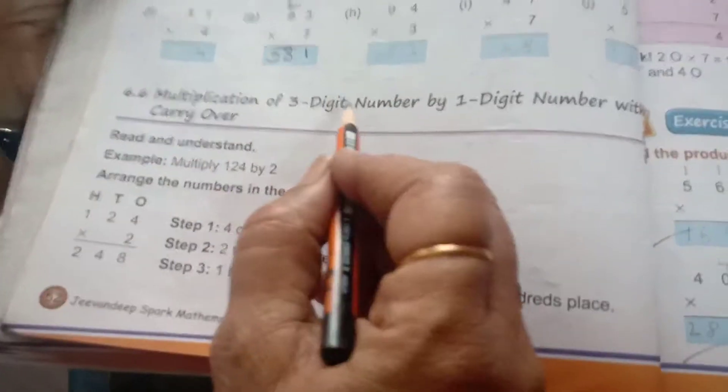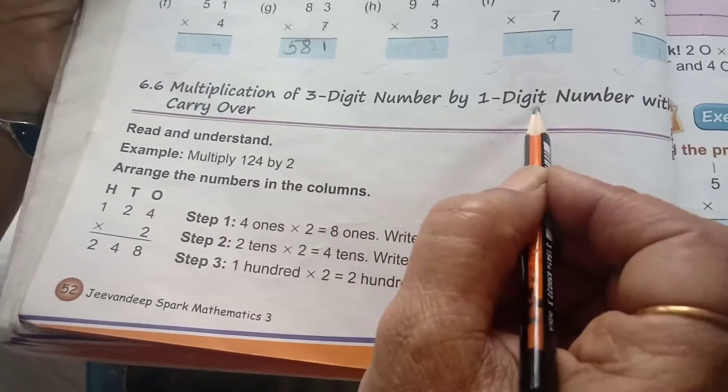Like this, you have to solve the sum. Now, multiplication of 3-digit number by 1-digit number. Now, we will solve it.